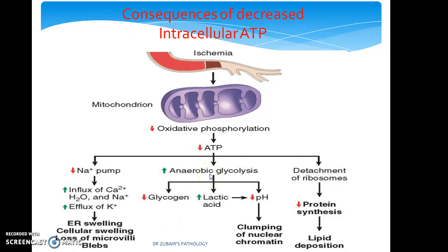As aerobic respiration is affected, the cell compensates by resorting to anaerobic glycolysis. This anaerobic glycolysis increases, resulting in an increase in lactic acid. As a result, there is acidosis — a fall in pH — resulting in clumping of nucleochromatin. Thirdly, there is detachment of ribosomes, causing a decrease in protein synthesis with lipid deposition.